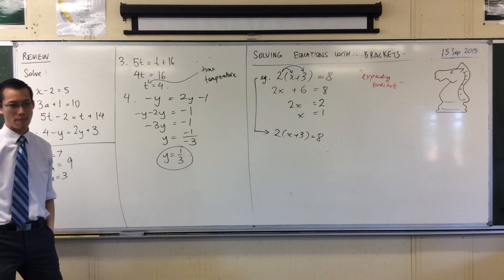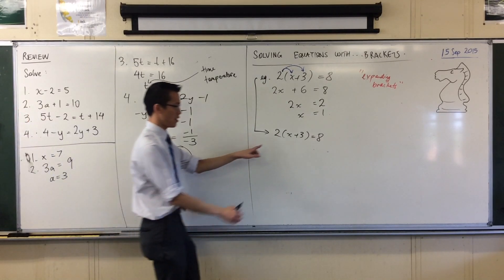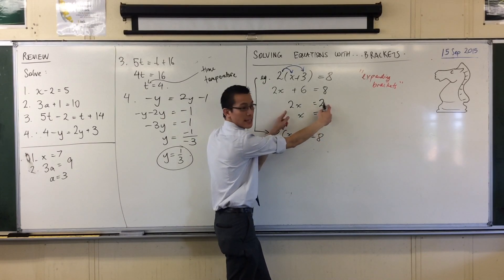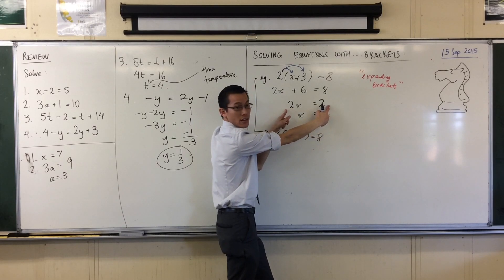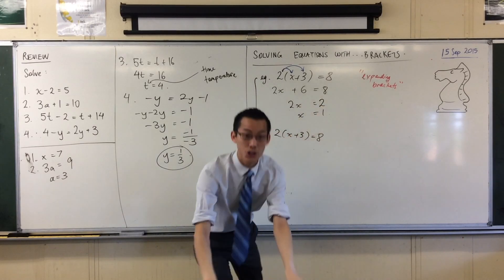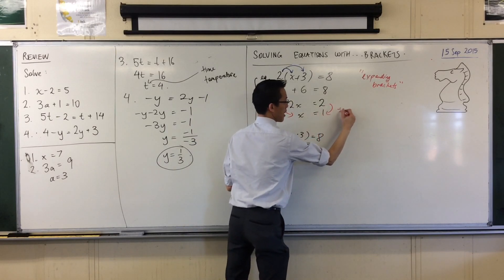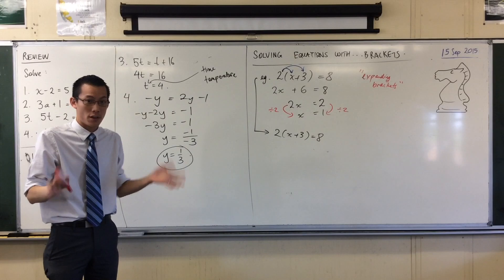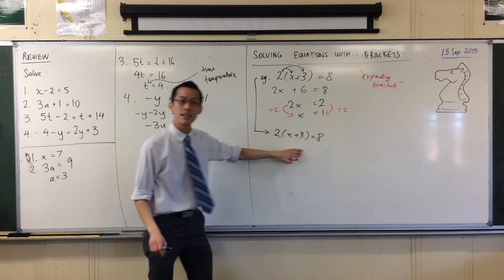Suppose I don't want to expand the brackets first. This might be a good idea because do you see that both sides are multiplied by 2. Do you see that? Just like both sides here, both sides are multiplied by 2. So from this line to this line, you divide it by 2. Divide by 2. Divide by 2. There's no reason I can't do that first. I can do that first. It's no problem. What will happen to the left-hand side when I divide this by 2?